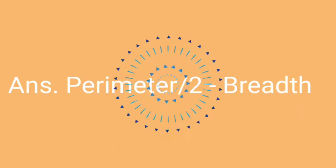The correct answer of this question will be perimeter by 2 minus breadth. Length of rectangle equals perimeter divided by 2, minus breadth.